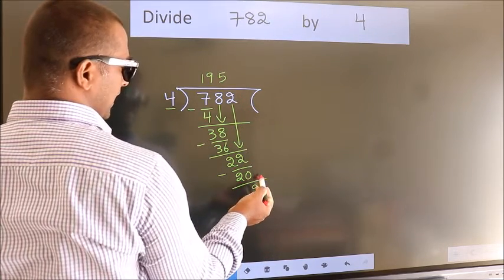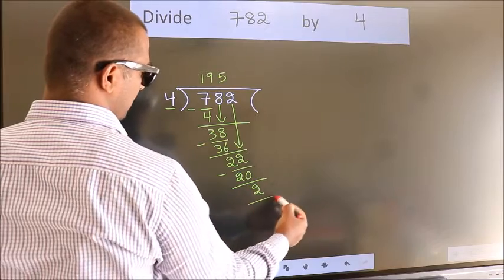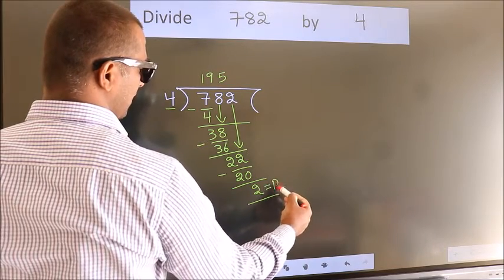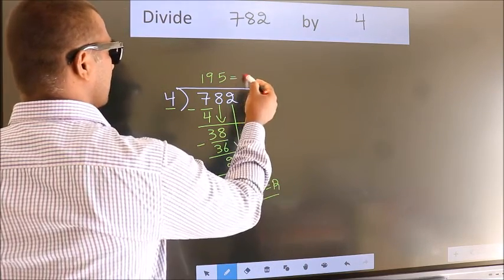No more numbers to bring it down. So, we stop here. This is our remainder. This is our quotient.